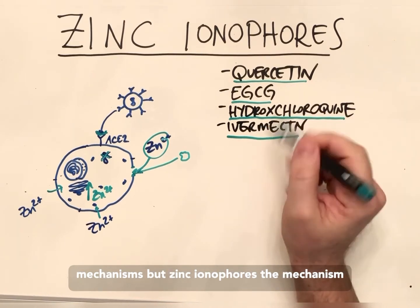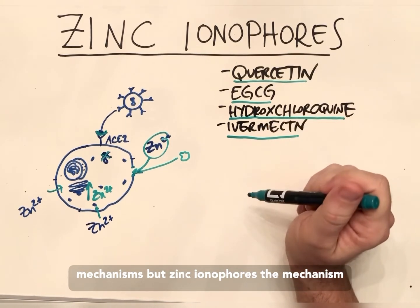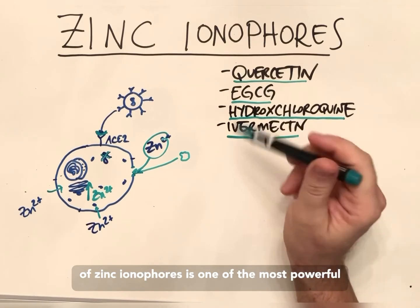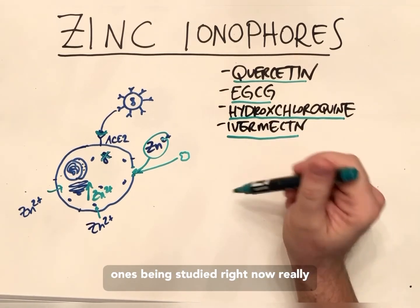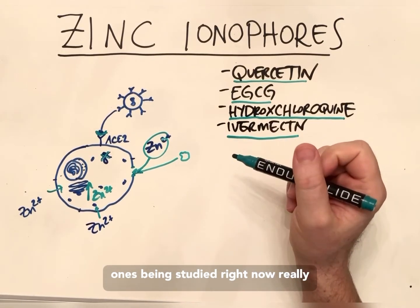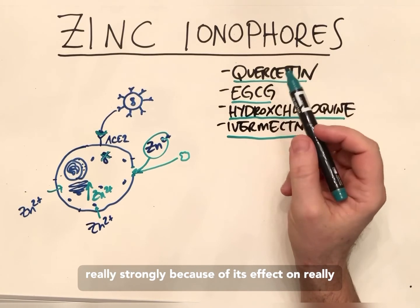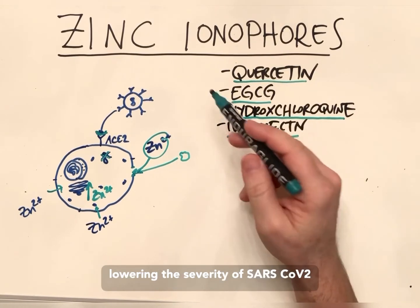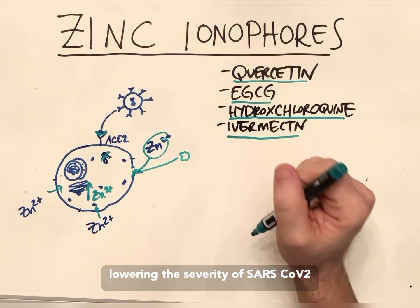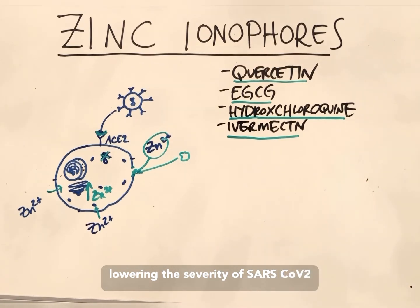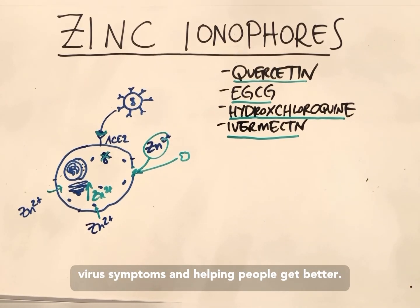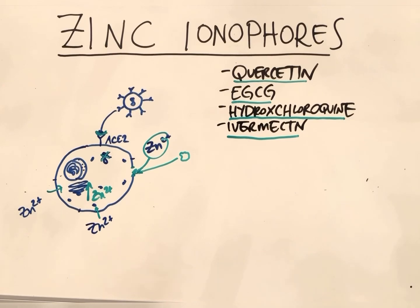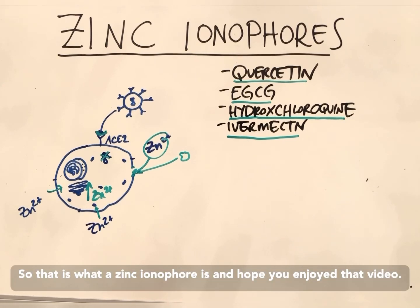There are other mechanisms, but the mechanism of zinc ionophores is one of the most powerful ones and is being studied very strongly right now because of its effect on lowering the severity of SARS-CoV-2 symptoms and helping people get better. So that is what zinc ionophores are — hope you enjoyed that video.